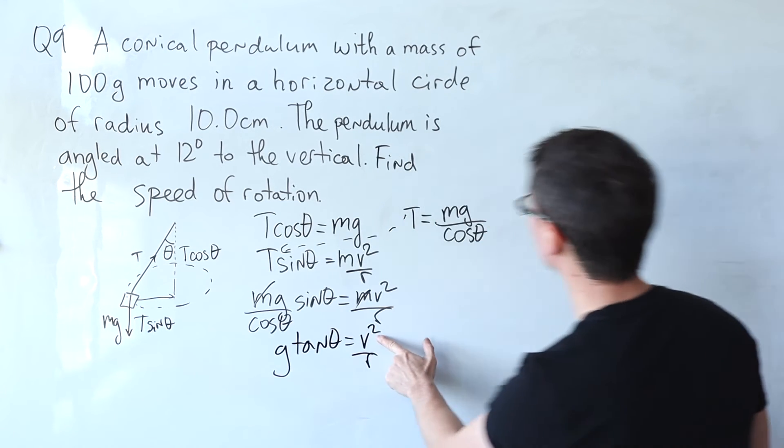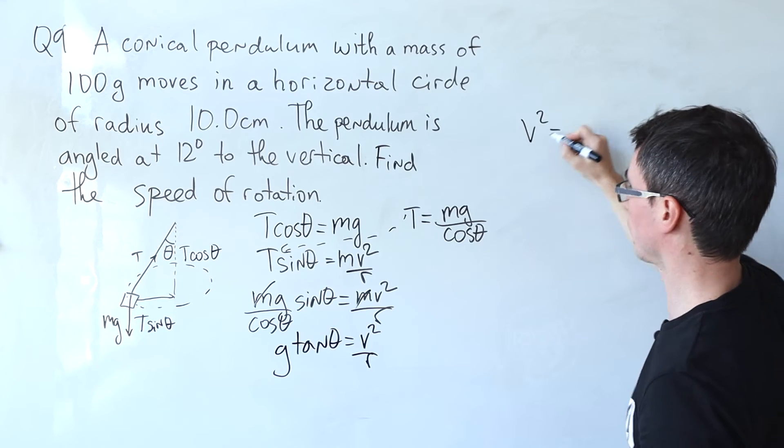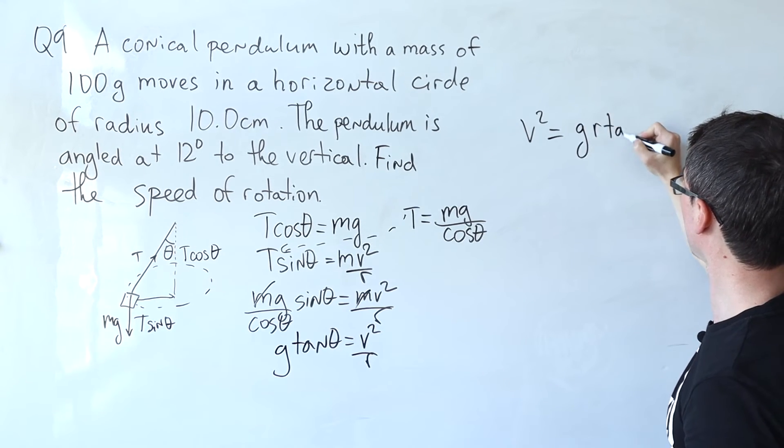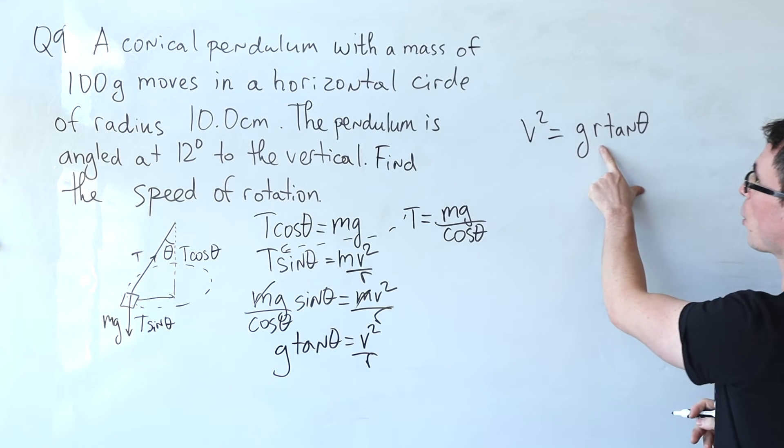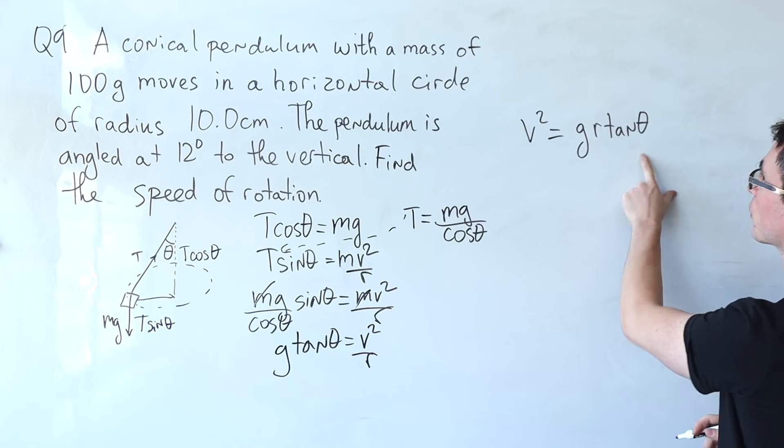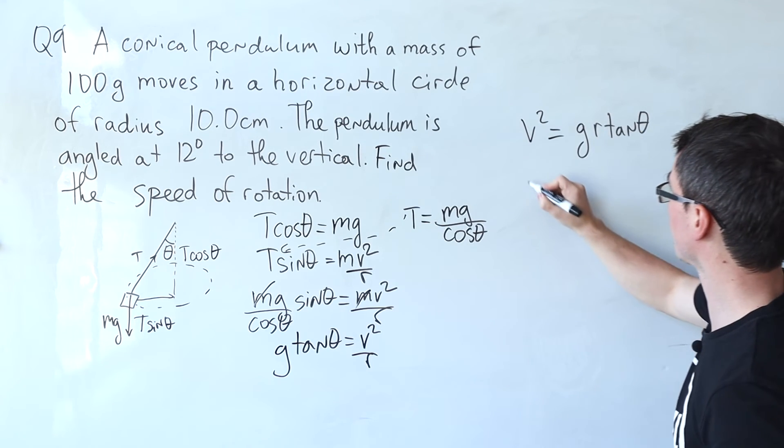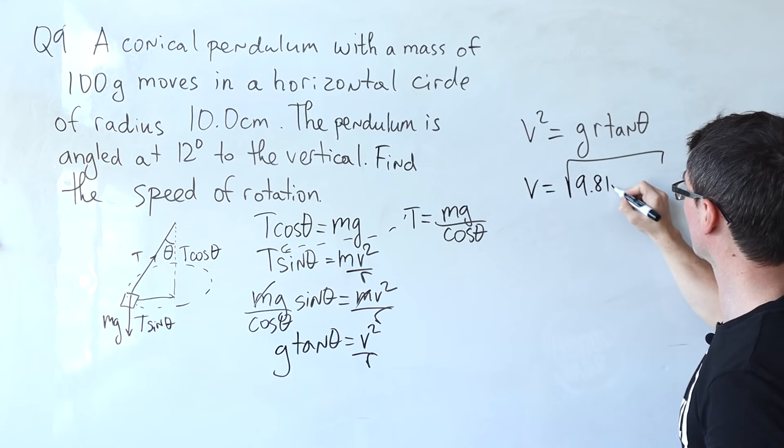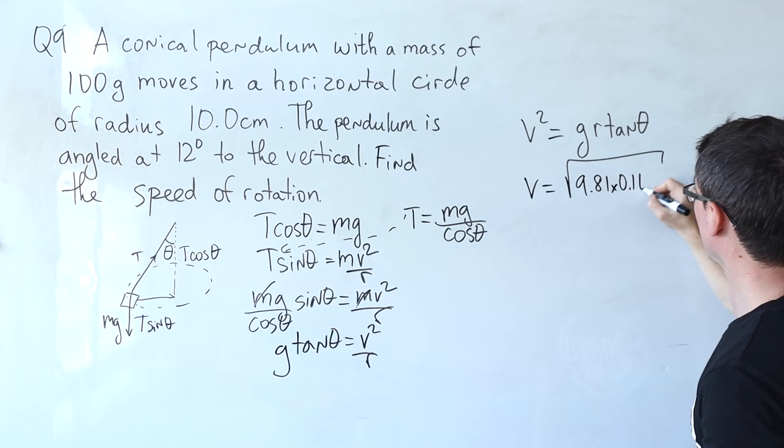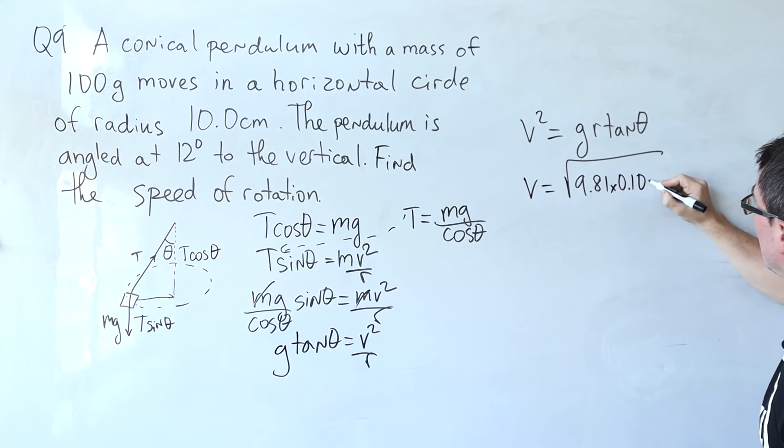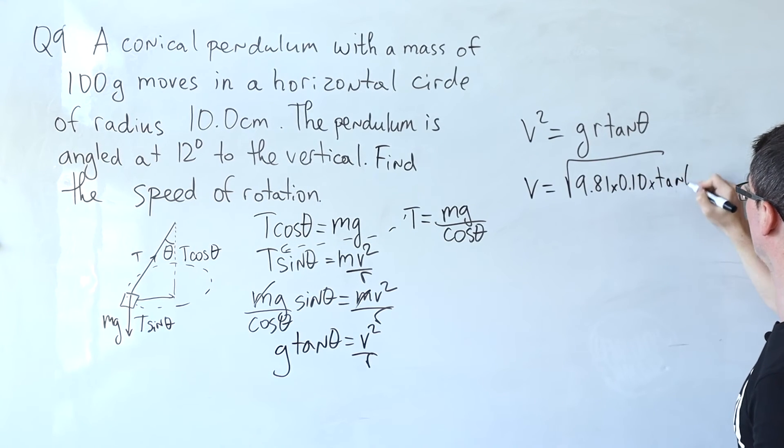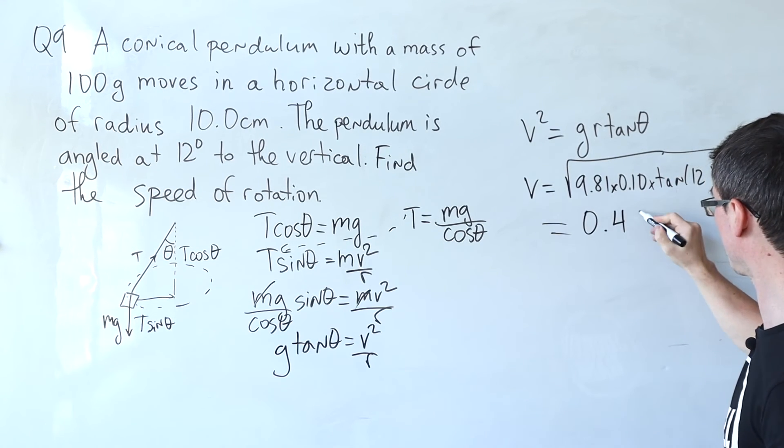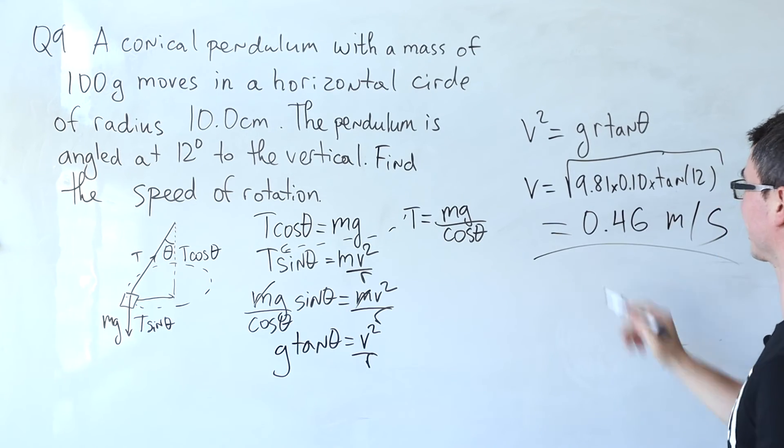We know what g is, we know what the radius is, we're given the angle as well so we're in business. The speed will be given by the square root of 9.81 times 0.1 meters multiplied by the tangent of 12 degrees. Putting this into a calculator we find about 0.46 meters per second up to two significant figures.